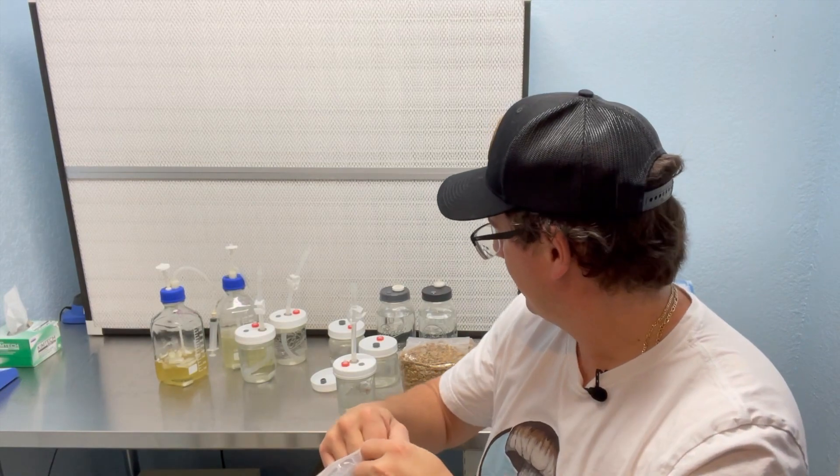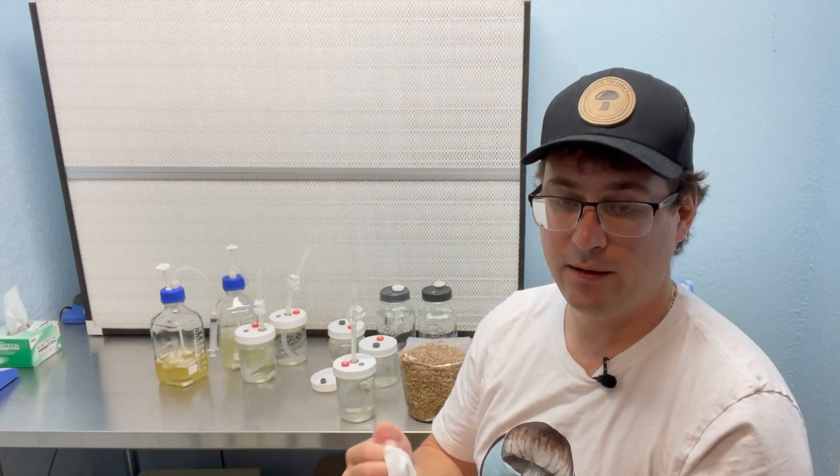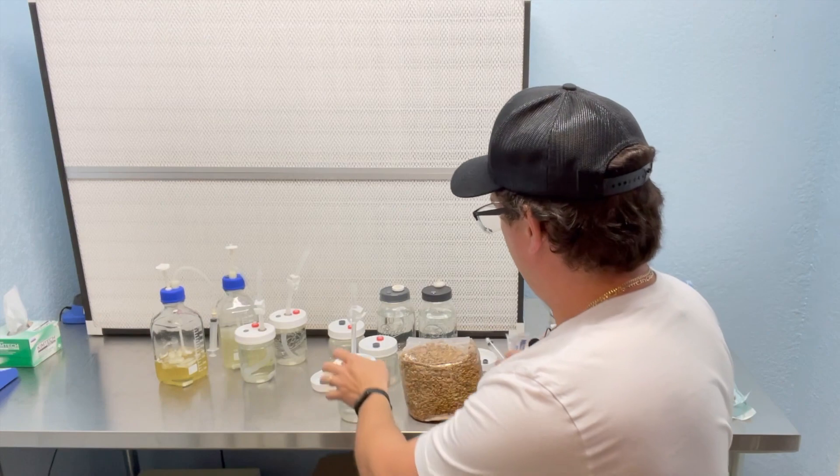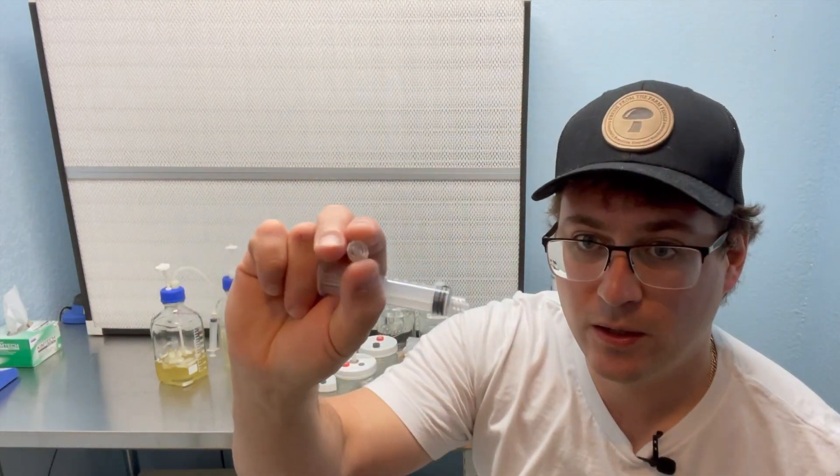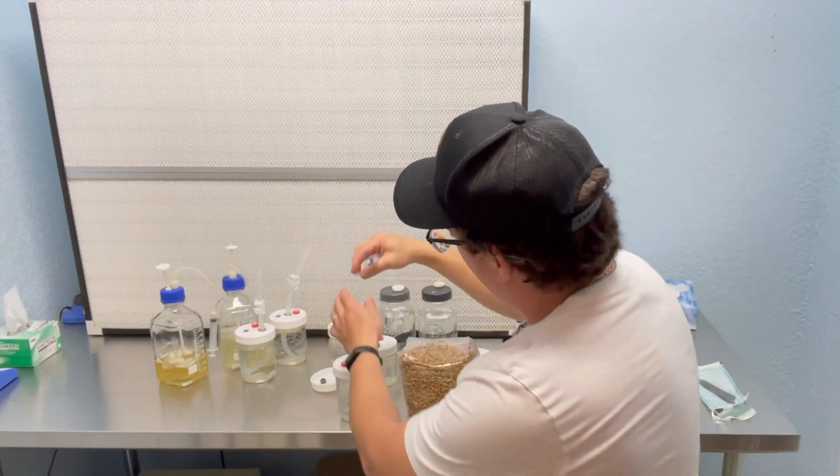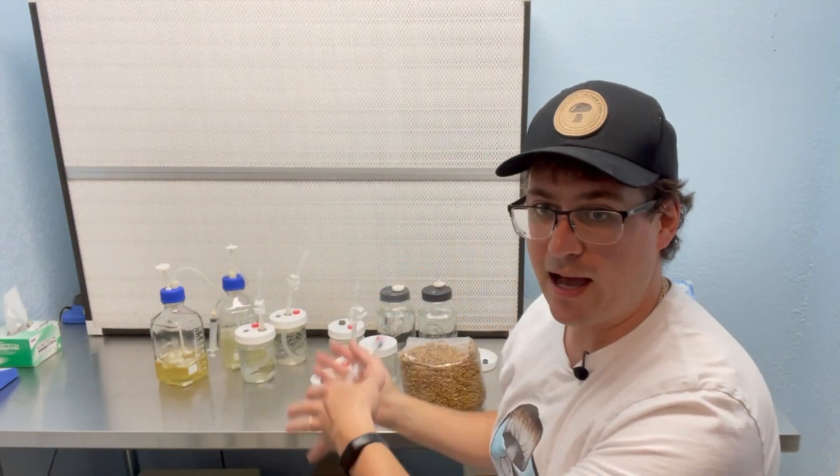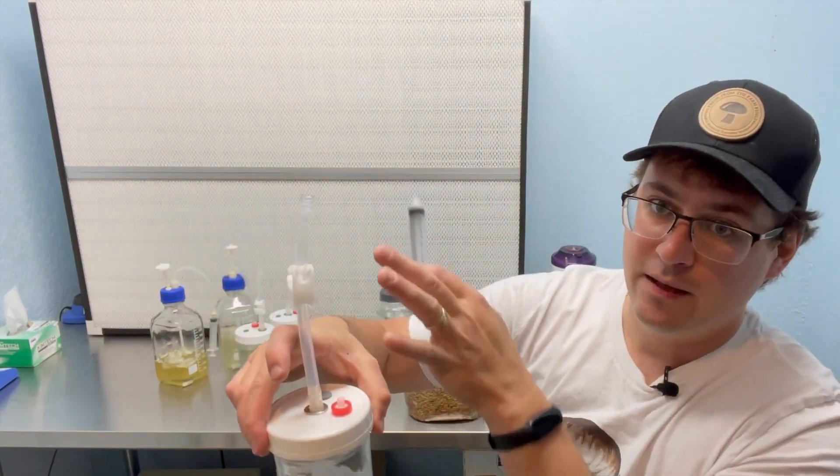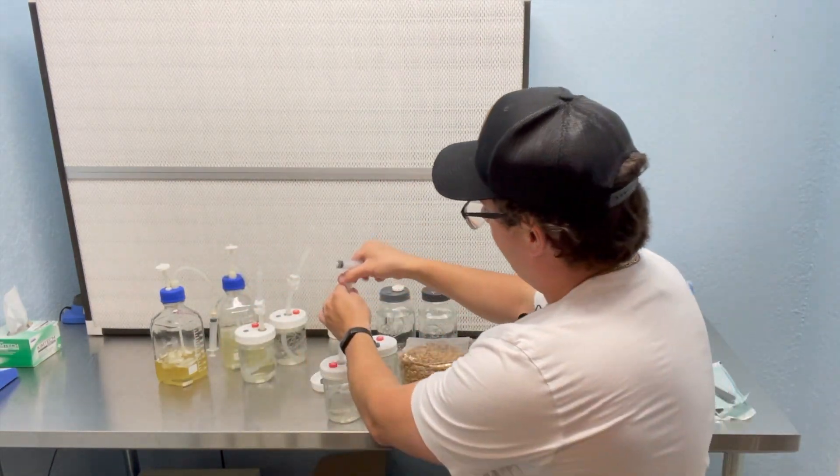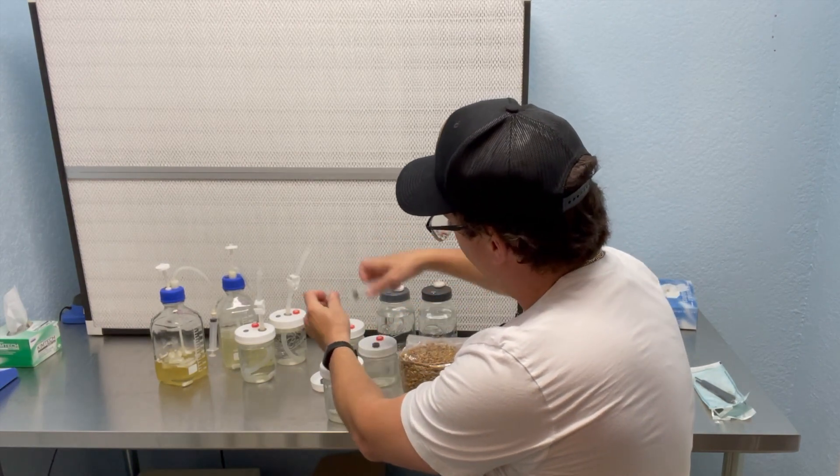So it's got these luer lock caps on here. So while you're sterilizing and you pull it out of the autoclave or the pressure cooker, you can keep the tip sterile. And then what I like to do is I'll take this lid off and then put my syringe on there right away.